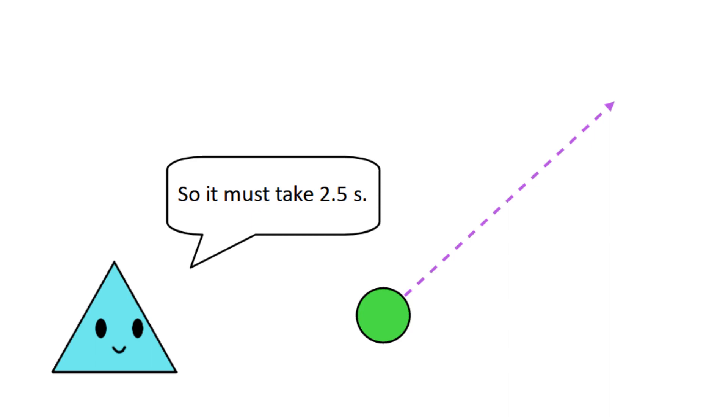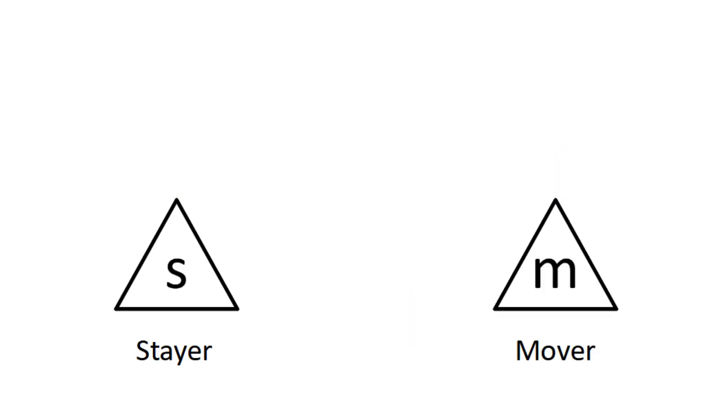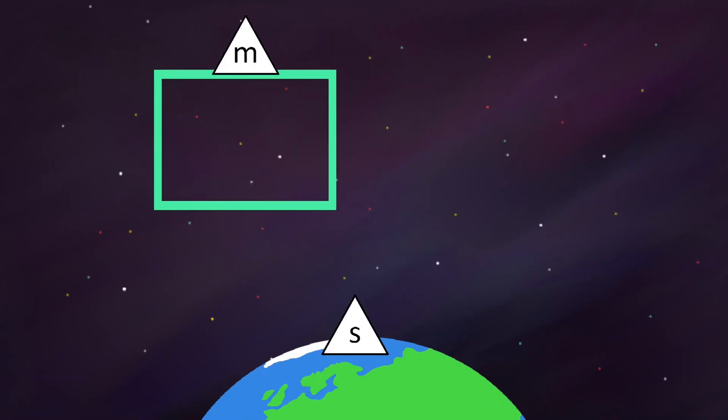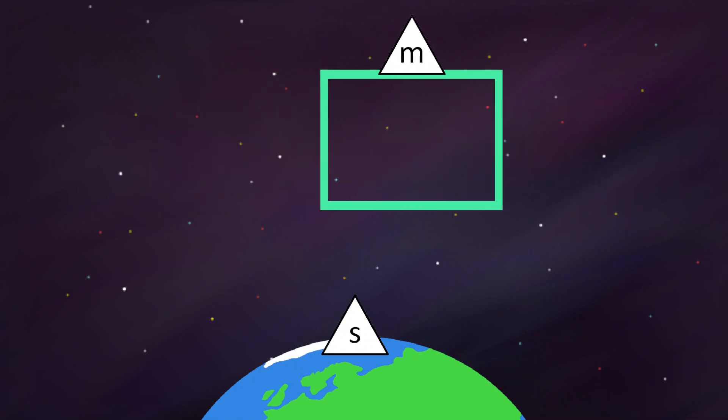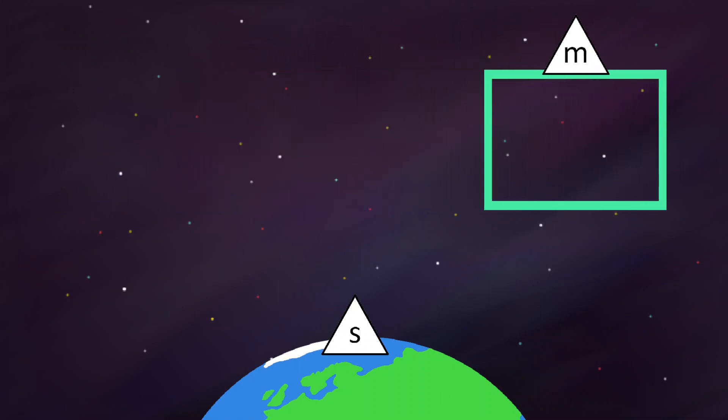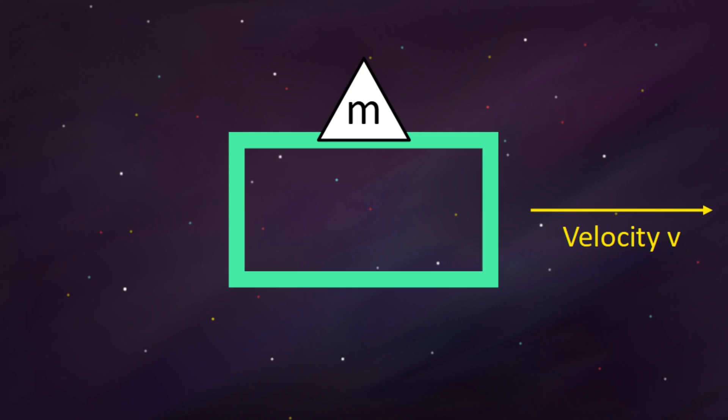There are two observers, stayer and mover. The stayer is on Earth, and the mover is going past in a spaceship. The spaceship is traveling at velocity v and is a distance L across.